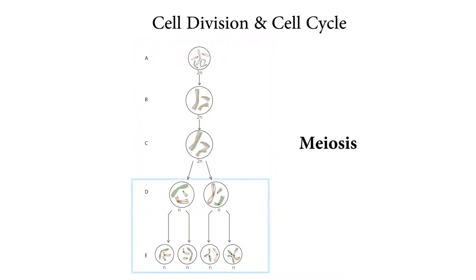In this stage, instead of entering into cytokinesis, this karyokinesis is followed by a second phase which is similar to mitosis, and only after that, from these two daughter cells, another two appear. That means four are formed at the end of meiosis. Only then cytokinesis occurs.